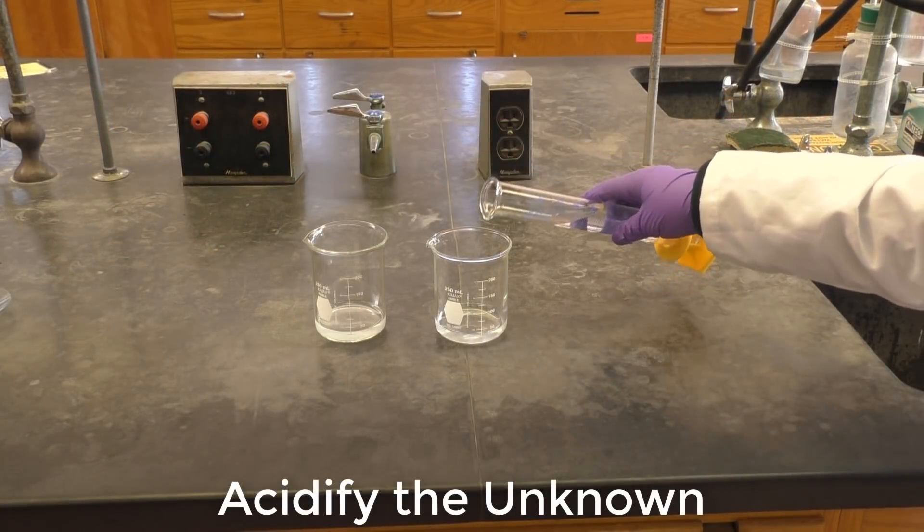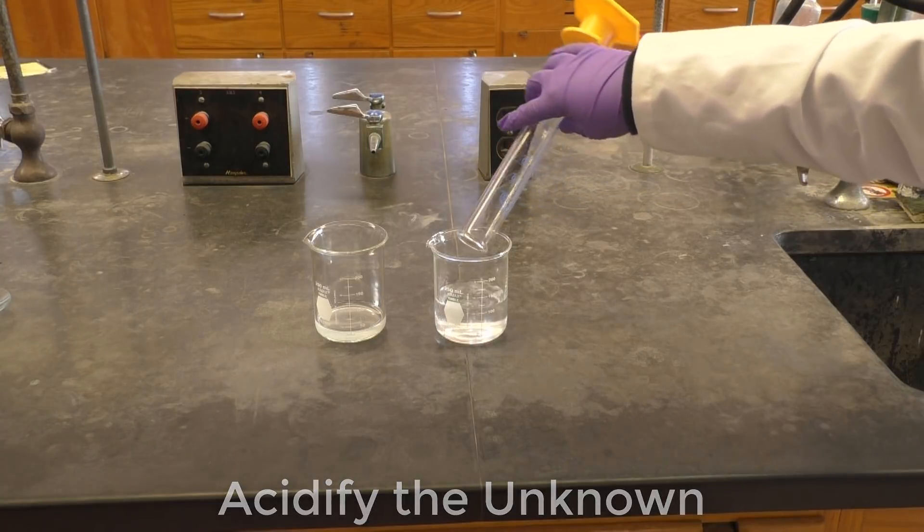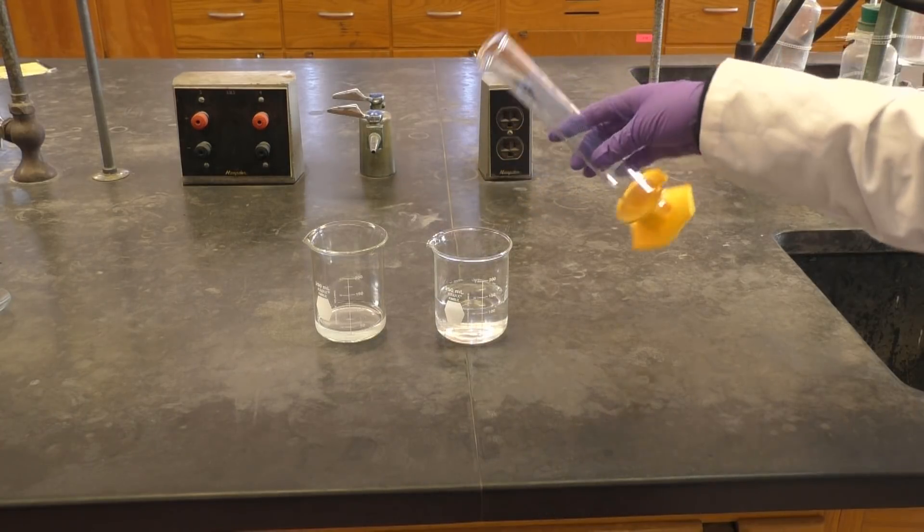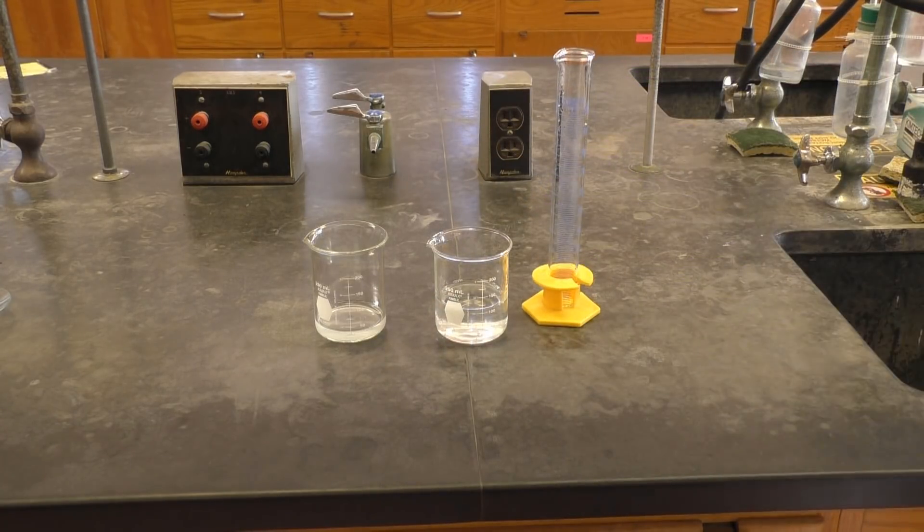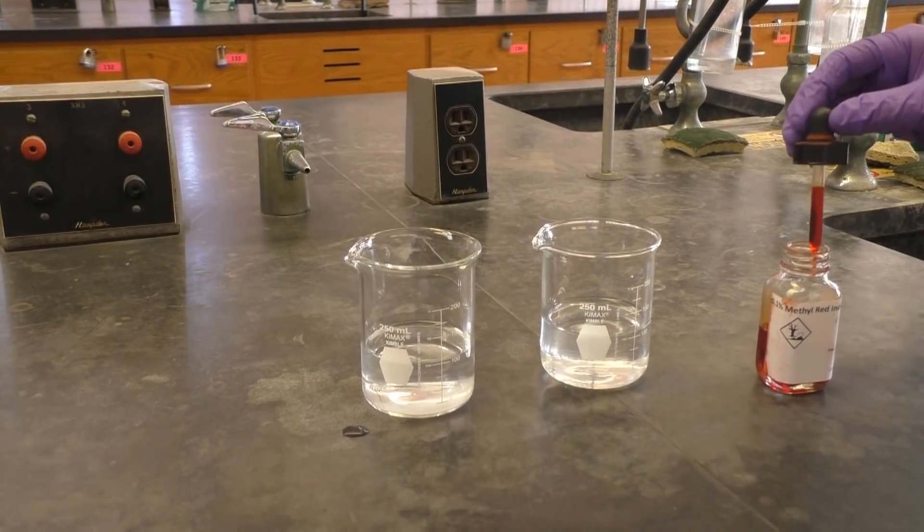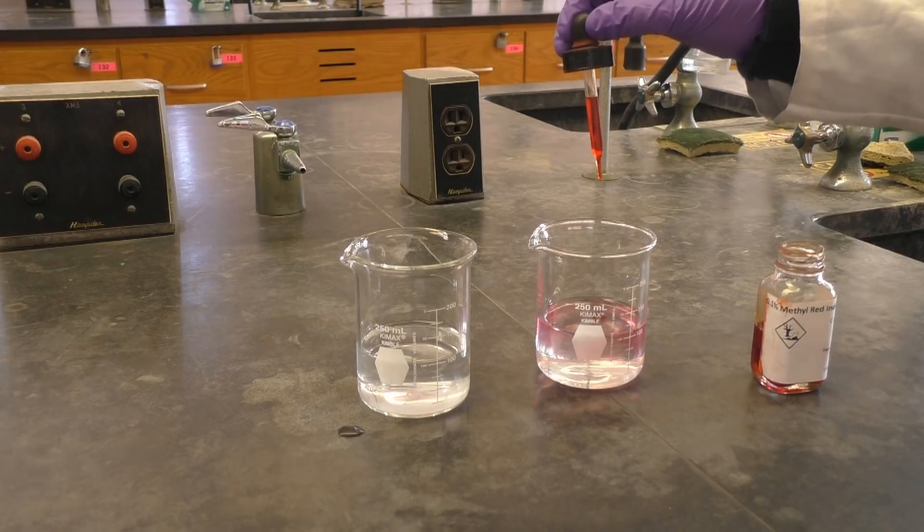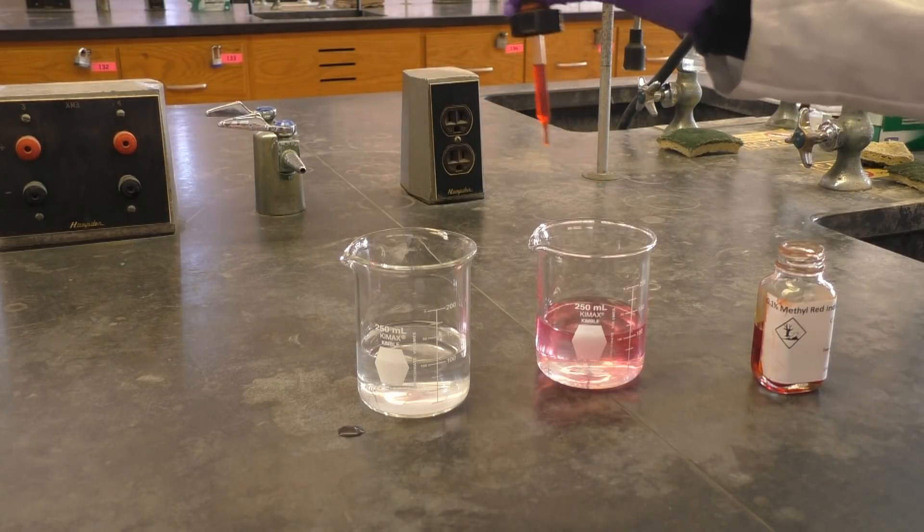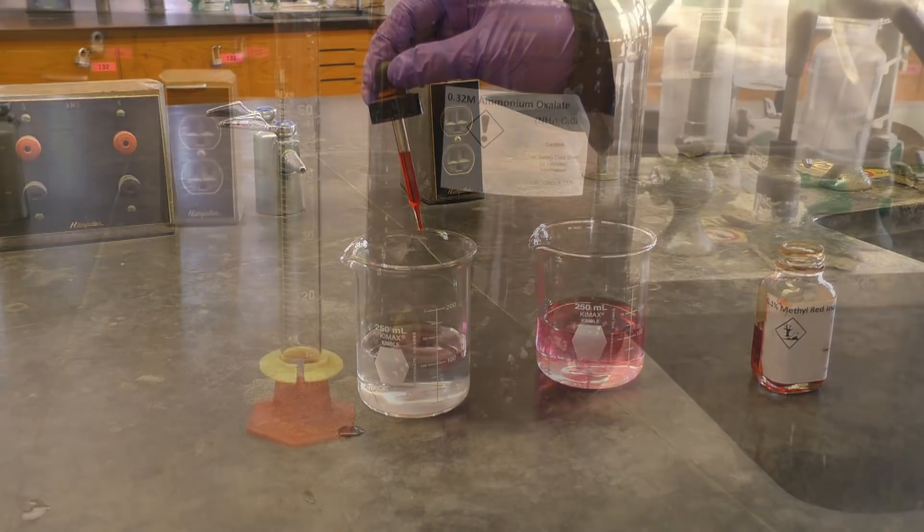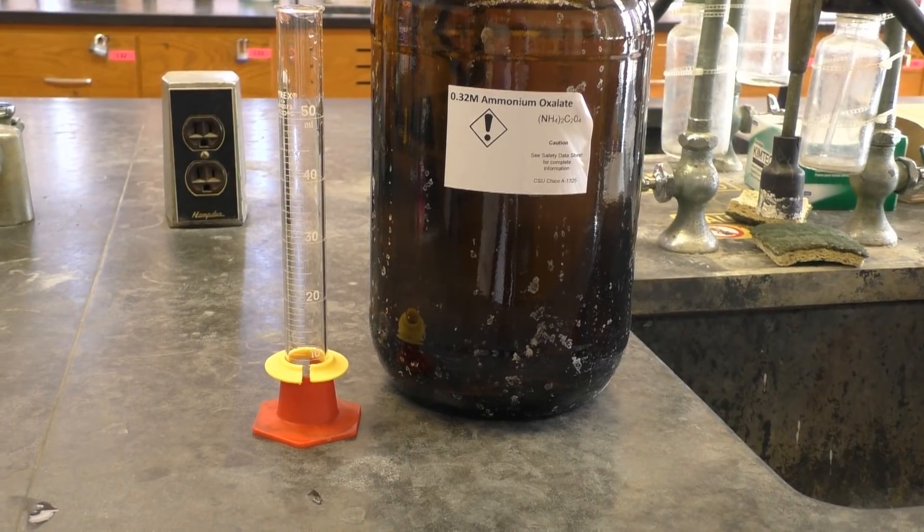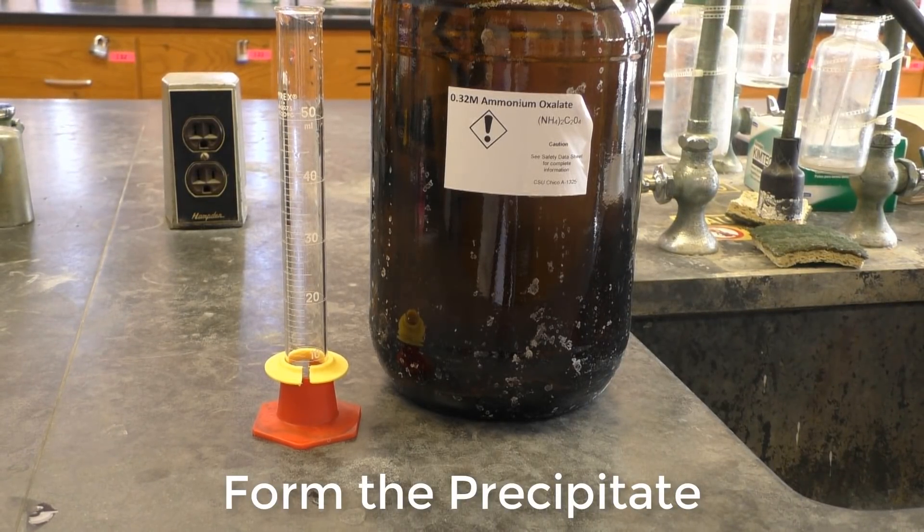Next you'll need to acidify each beaker by adding 75.0 milliliters of 0.1 molar HCl to each of your two beakers. Lastly you'll add five drops of the provided methyl red indicator to each beaker. This will be used later to help you know when the precipitation reaction is complete.